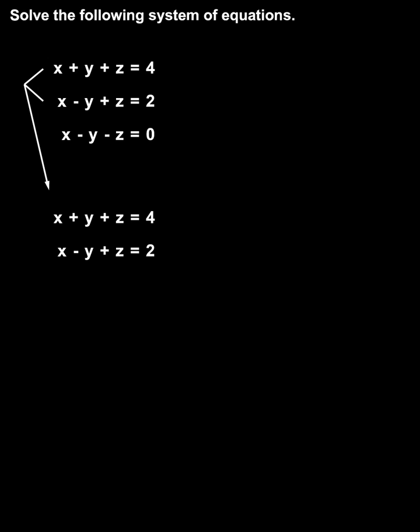Let's start with our first two equations: x plus y plus z equals 4, and x minus y plus z equals 2. Notice that if we add these equations together, the plus y and minus y will cancel out, and we have 2x plus 2z equals 6. In this new equation, we've eliminated the variable y.